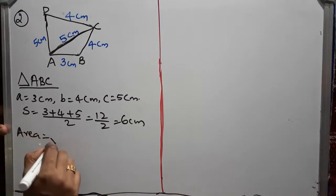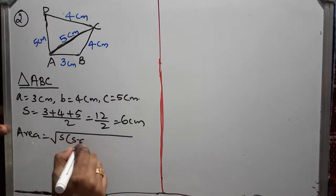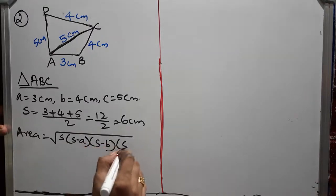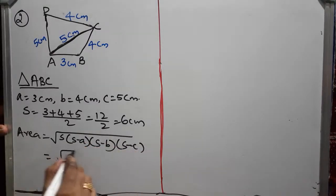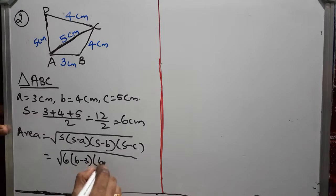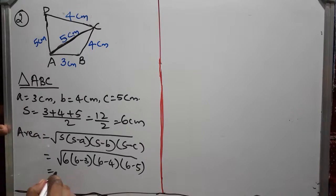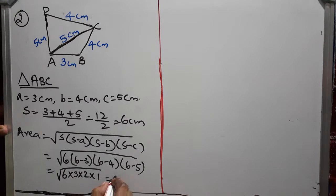First, you want to write formula. S into S minus A into S minus B into S minus C which is equal to 6 into 6 minus 3, 6 minus 4, 6 minus 5 which is equal to root of 6 into 3 into 2 into 1. That means 6 into 6, root of 6 into 6 is 36. So, directly you can write it as 6 cm square.